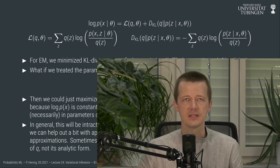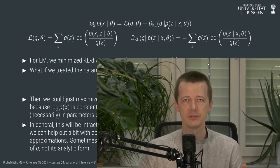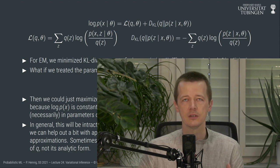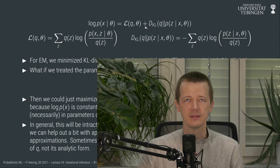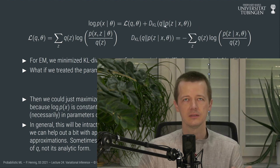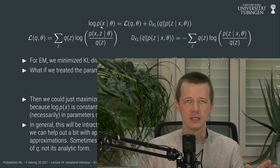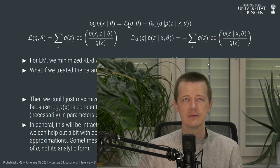The idea is: if we have access to the full conditional distribution p of z given x and theta, then we can set q equal to p of z given x. When we do that, the KL divergence is minimized and actually becomes zero — it vanishes because its two arguments are the same. That means the log marginal likelihood p of x given theta equals the ELBO.